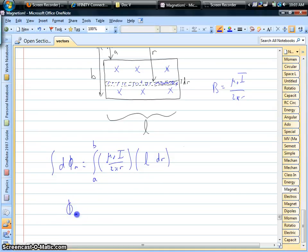And in the end, if we work this out, we can pull out constants. The l is a constant, we pull that out, μI l over 2π. And our integral that we're left with is dr over r, which is going to be natural log.